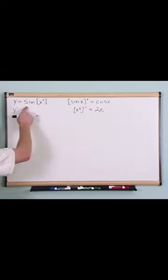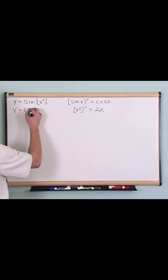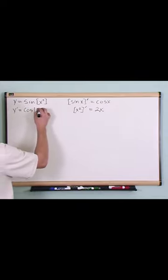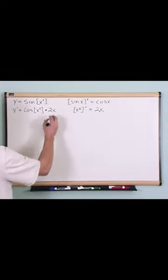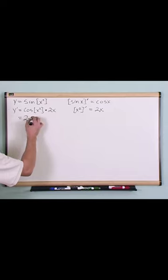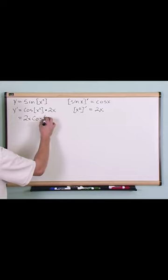The derivative of this is the cosine of x squared, okay, times 2x. Another way to rewrite this is 2x times the cosine of x squared.